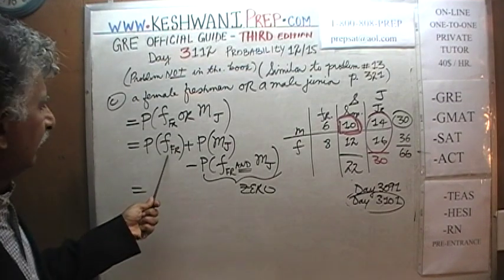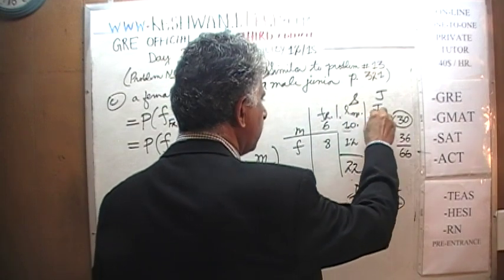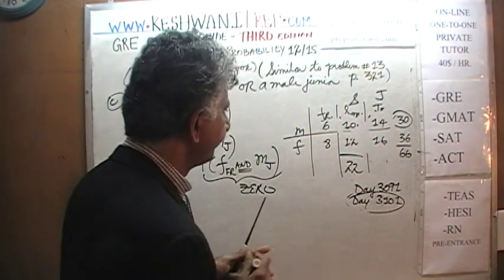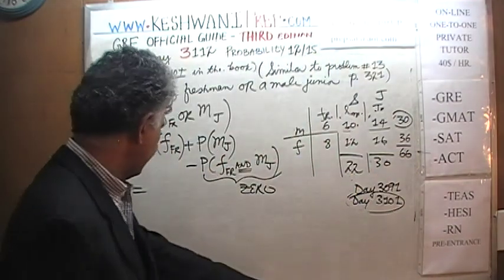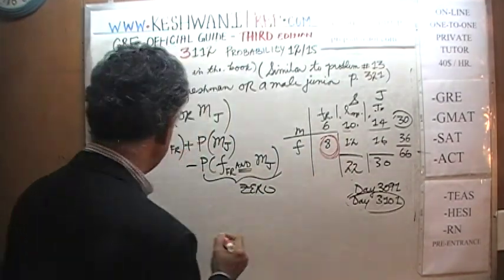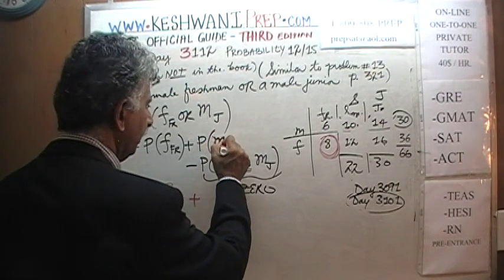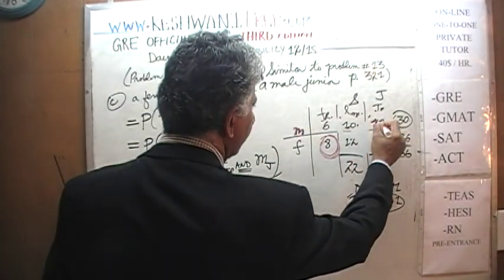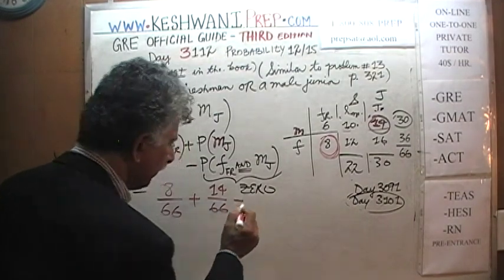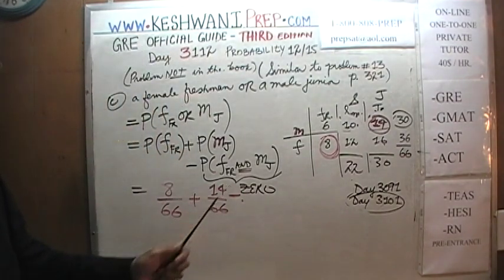Since the events are mutually exclusive, the intersection term is zero, and we simply add: how many female freshmen are there? We see 8 of them — so 8/66. How many male juniors? There are 14 of them — so 14/66. Minus zero. The calculation is 8/66 + 14/66 − 0.